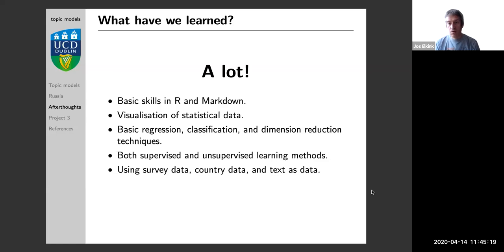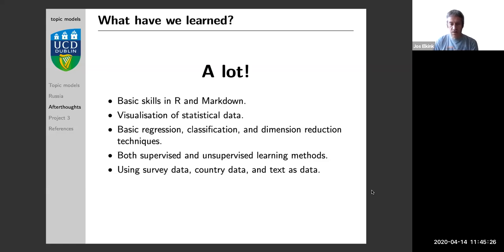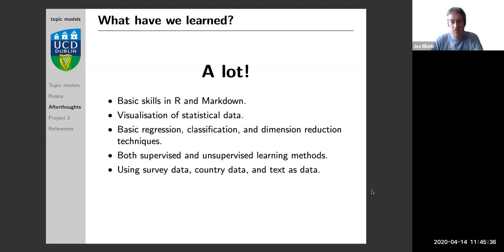And in between the lines, we've also learned to look at different types of data. We've looked at survey data with individual respondents and their answers to questions. We've looked at country-level data where we have statistical data on countries. And finally, we have looked at text as quantitative data and how we can work with it.